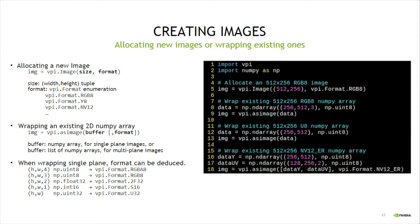Most commonly, users will wrap existing buffers to be used as input to VPI pipelines. For instance, line 8 creates a 512 by 256 NumPy array with three interleaved channels of uint8 pixels. Line 9 will then get this buffer and wrap it into a VPI image.